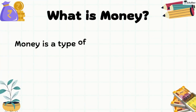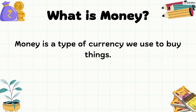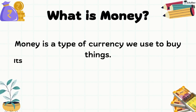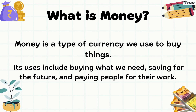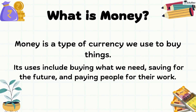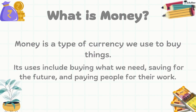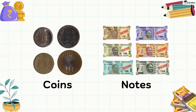Money is a type of currency we use to buy things. Its uses include buying what we need, selling for the future, and paying people for their work. It comes in coins and notes.